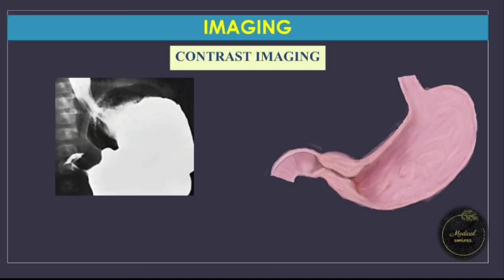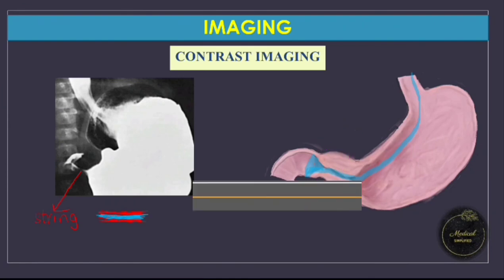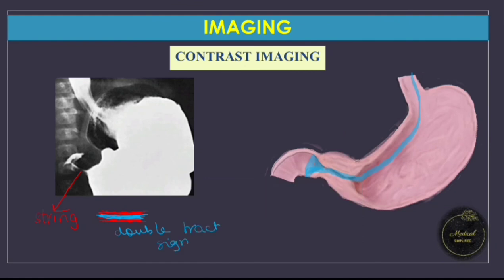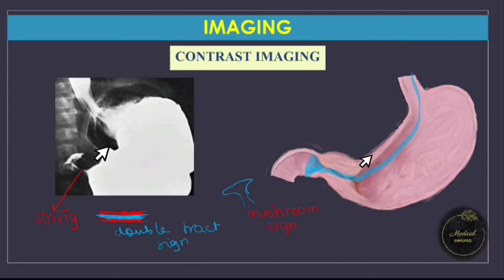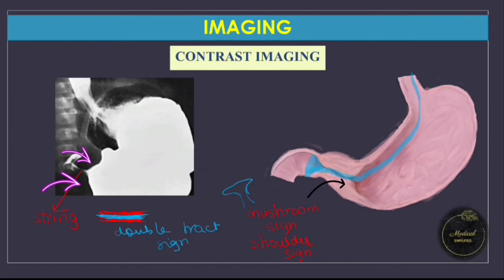On contrast imaging, when a feed with contrast is given, it forms a thin string-like line passing through the narrowed area — giving us the string sign. This string is compressed on both sides by thickened pyloric muscle, appearing like two tracks, known as the double track sign. The contrast resembles a mushroom: the top is where contrast enters the duodenum and spreads, and the stem is the double track inside the pylorus — called the mushroom sign. The area before the stenosed pylorus shows bulging of hypertrophied muscle into the proximal antrum, resembling shoulders — hence the shoulder sign.